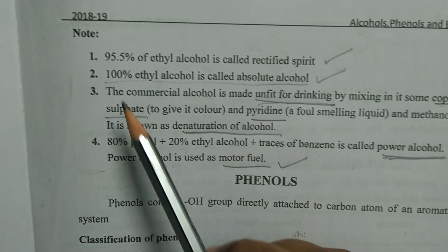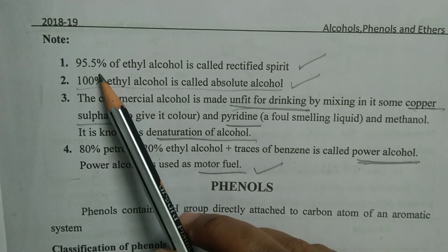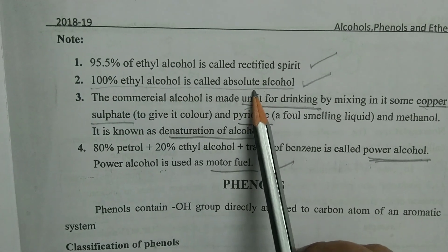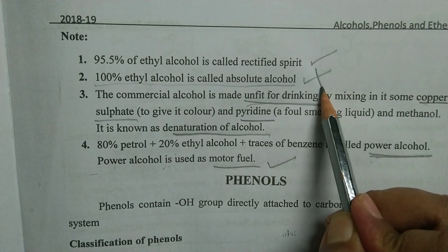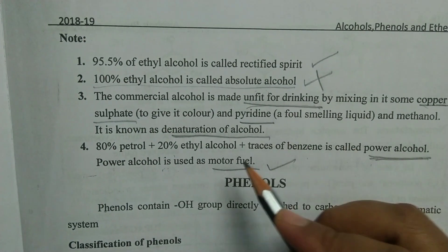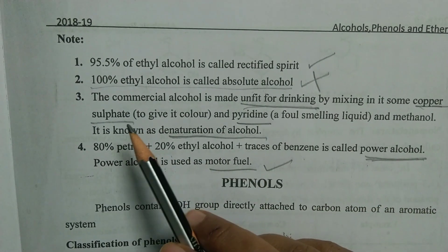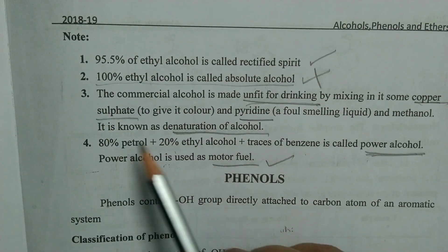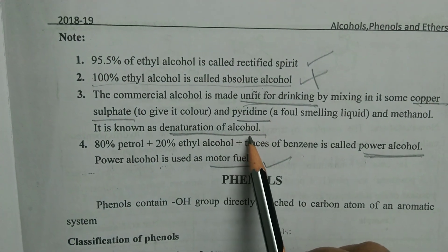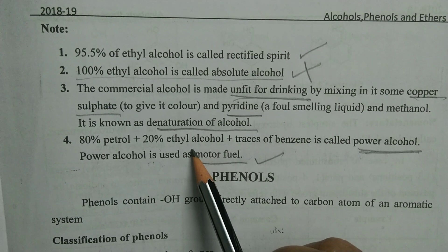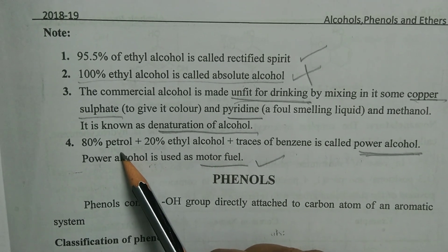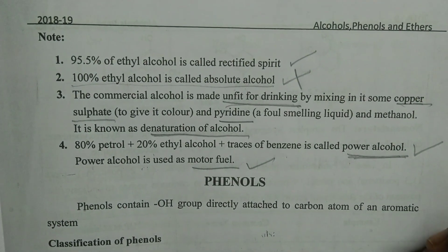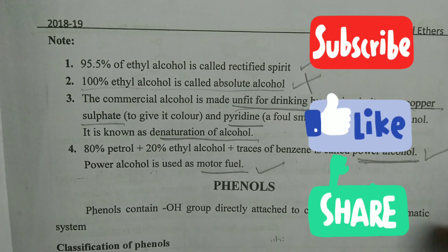To recap: 95.5 percent ethyl alcohol is rectified spirit; 100 percent ethyl alcohol is absolute alcohol and is not fit for drinking as it will burn your tongue; methyl alcohol mixed with pyridine and copper sulfate is denatured alcohol; and 20 percent ethyl alcohol mixed with 80 percent petrol is power alcohol. With this, we have completed the alcohols chapter.